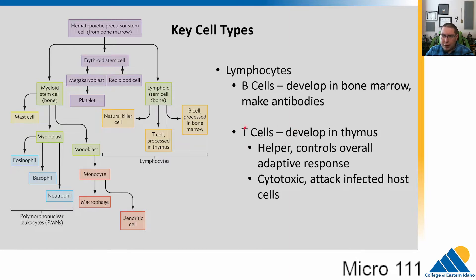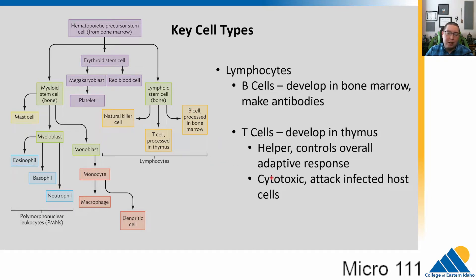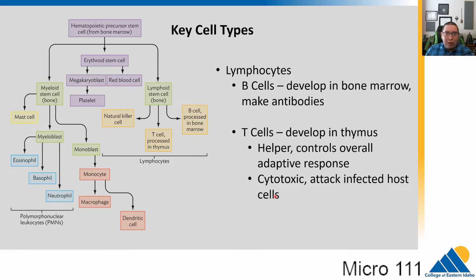T cells develop in the thymus. There are two branches: helper T cells, which really control the whole adaptive immune system and tie back into B cells, and cytotoxic T cells, which deal with intracellular infections by attacking and destroying infected host cells. There are many subclasses of T cells, but you really just need to know about helper T cells and cytotoxic T cells.